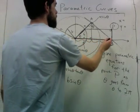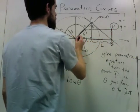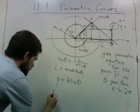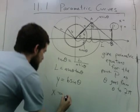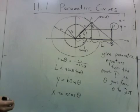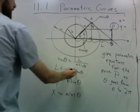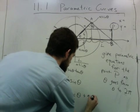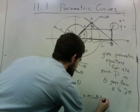So the x value of P is this plus this. The first part is a cosine theta, and the second part is a sine theta tangent theta.